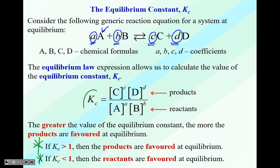Let's take a look at this equilibrium constant a little closer. These are your entities — your products. The coefficients become exponents, so that's really important. That's all you need to know, and then you can use your mathematical skills to figure it out.